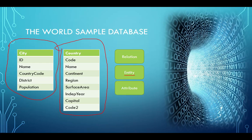The third term we want to introduce is the idea of an attribute. An attribute is a descriptive characteristic of an entity. If we think about it in terms of country, we're going to have a code for the country, a name, what continent it's on, what region, what's the surface area, when they became independent, what's their capital, what's the two-digit code — all of these are attributes. They're properties that describe the entity being tracked inside the relation.